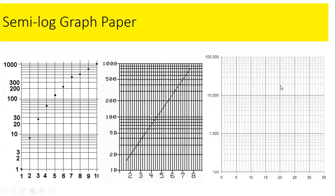You can also use different cycle configurations depending on your data. If your data goes up to 1,000, you can start the first cycle with a baseline of 1, and the lines will be multiples: 1, 2, 3, 4, 5, 6, 7, 8, 9, 10. This completes the first cycle, and 10 then becomes the baseline for the next cycle.